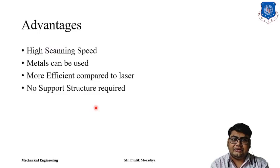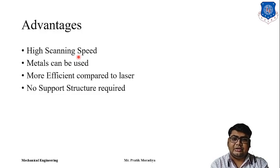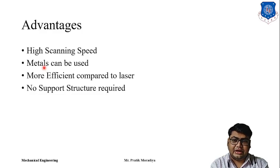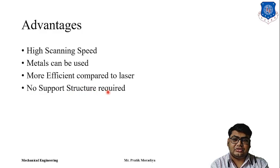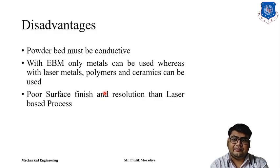The advantages of electron beam melting are: first, the scanning speed can be up to one kilometer per second or even higher. Second, metals such as titanium can be used with electron beam melting. Third, it is a more energy-efficient process than laser, so power consumption is less. Finally, as with all powder-bed fusion techniques, no support structure is required because the powder itself acts as the support structure.